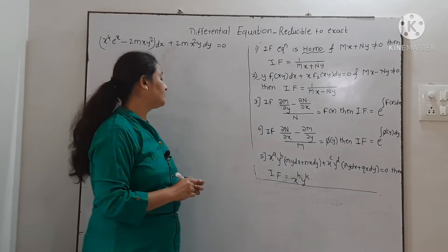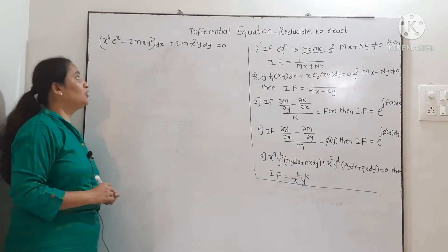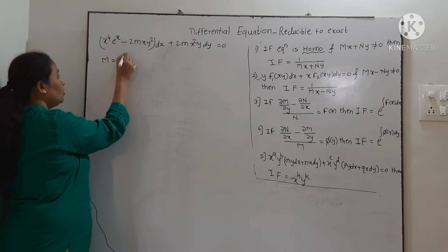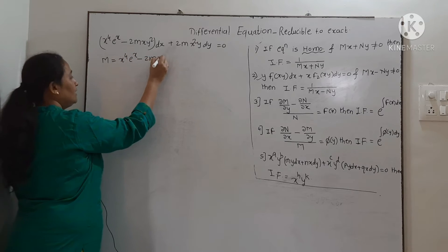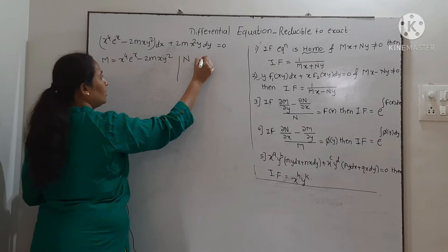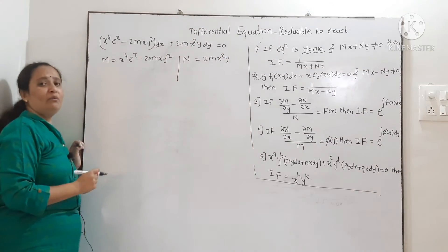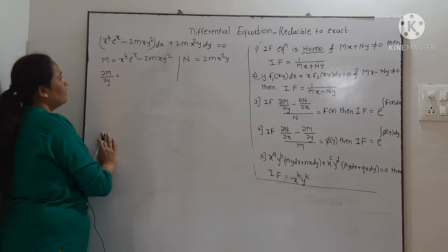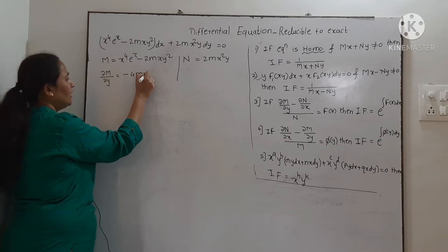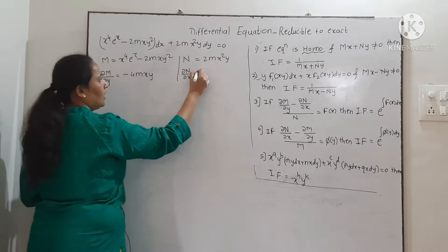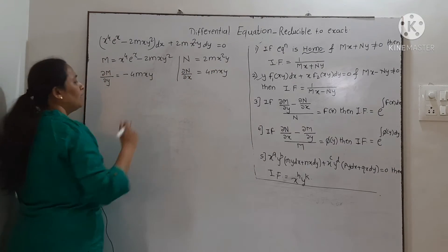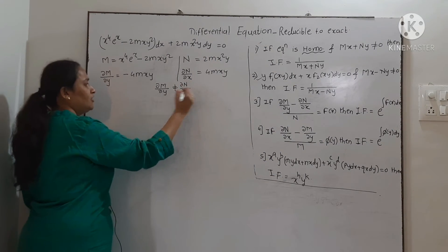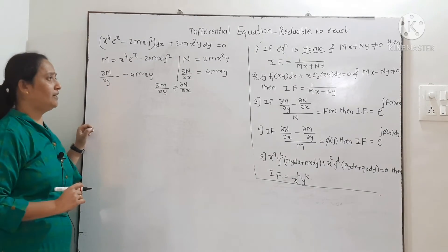We will take the next example: x⁴eˣ − 2mxy² dx + 2mx²y dy = 0. Comparing with M dx + N dy: M = x⁴eˣ − 2mxy², N = 2mx²y. Finding ∂M/∂y = −4mxy, and ∂N/∂x = 4mxy. Since ∂M/∂y ≠ ∂N/∂x, the equation is not exact. We will apply the rules one by one.